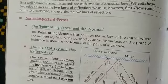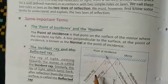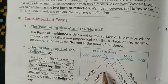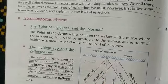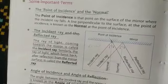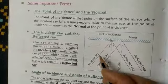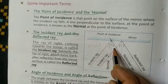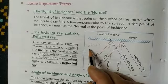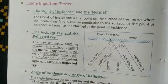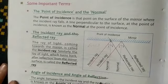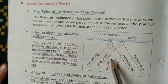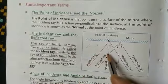You can see in the mirror, the first law: the incident ray, reflected ray, and normal, they all lie in the same plane. Then we have the second law: angle of incidence is equal to angle of reflection. Angle I is equal to angle R. This is your second law of reflection.